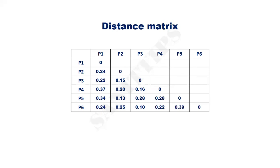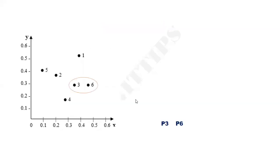Initially, all points are in separate clusters. At each step, we merge the closest pair of clusters until all clusters are placed under a single cluster. From the distance matrix, identify the shortest distance. It is 0.10. Hence, the closest pair is P3 and P6. Merge them together, so now P3 and P6 are merged into one cluster.